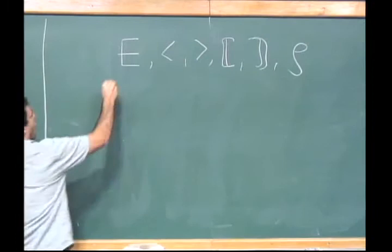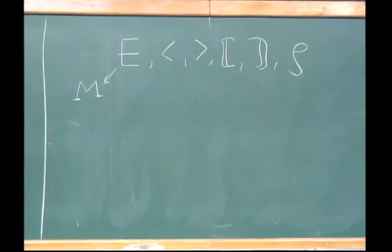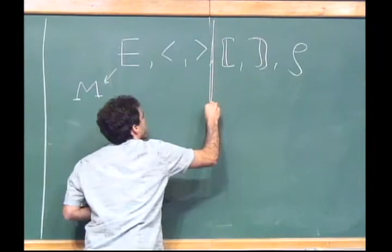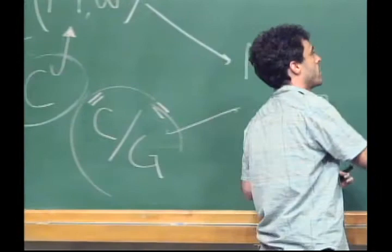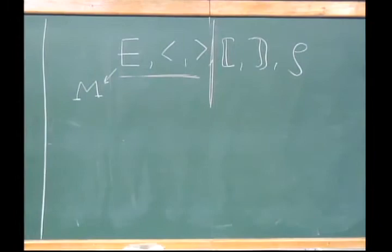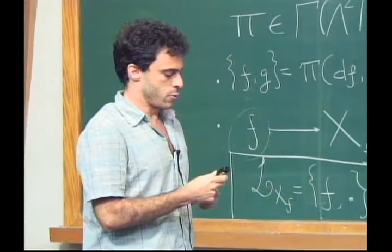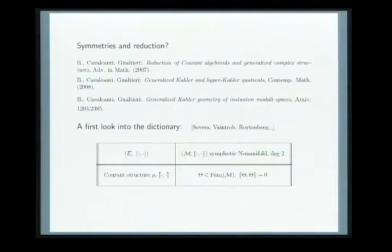The beginning of this dictionary is as follows. The central object is a Courant algebroid — all this stuff defined on a vector bundle over a manifold M, where you define geometrical structures by looking at special sub-bundles or endomorphisms preserving this structure. The key observation is that you can break this information into two parts. A vector bundle with a pseudo-Euclidean pairing is equivalent to a symplectic manifold of degree two.